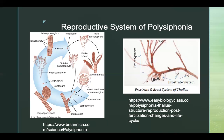For fertilization of two gametes to occur, the spermatium needs to fall on the upper elongated neck of the carpogonium called the trichogyne. The wall of the trichogyne dissolves, allowing the spermatium to enter the carpogonium and make its way to the basal portion. Fertilization is complete with the formation of a diploid nucleus that later divides into two nuclei.